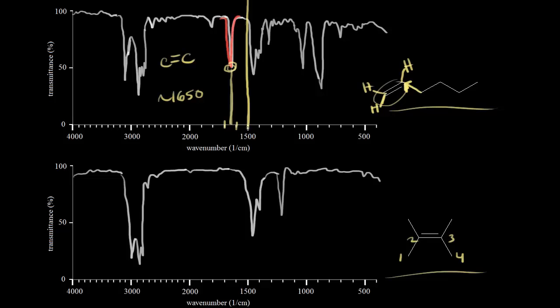If we once again draw our line at around 1500 and we look in the double bond region, we don't see a signal. The reason we don't see a signal is because this is a symmetrical alkene. This is symmetric about the double bond here—it's the same on both sides. Since it's a symmetrical alkene, there's no dipole moment.